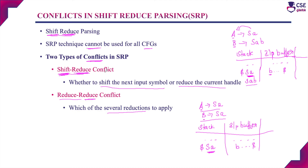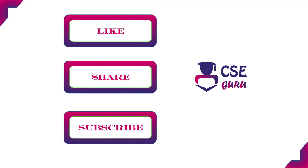Shift-reduce conflict and reduce-reduce conflict are the two main conflicts in the shift-reduce parsing technique. Because of these two conflicts, we cannot implement this technique for all context-free grammars. In the next session, we will discuss shift-reduce conflict with an example. Thank you for watching this video.